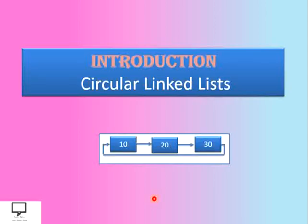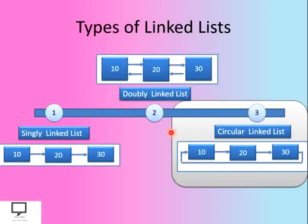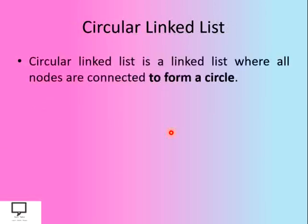Now let's start with the introduction to circular linked list. There are different types of linked list: SLL, that is singly linked list; DLL, that is doubly linked list; and CLL, that is circular linked list. I have already covered singly linked list and doubly linked list on my channel. The circular linked list is a linked list where all nodes are connected to form a circle — that's why the name is given circular linked list.